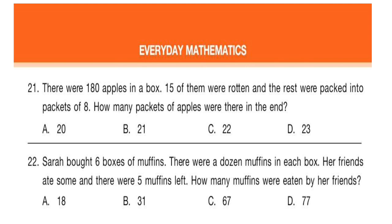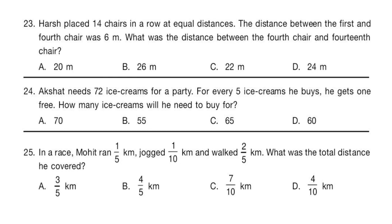Question 22: Sarah bought 6 boxes of muffins. There were a dozen muffins in each box. Her friends ate some and there were 5 muffins left. How many muffins were eaten by her friends? Question 23: Hersh placed 14 chairs in a row at equal distances. The distance between the first and fourth chair was 6 meter. What was the distance between the fourth chair and 14th chair?